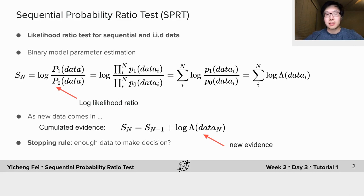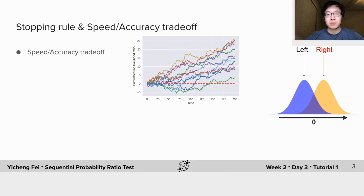Altogether, the SPRT is the online likelihood ratio test for sequential IID data plus a stopping rule.